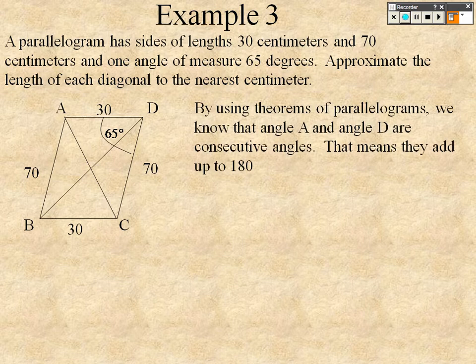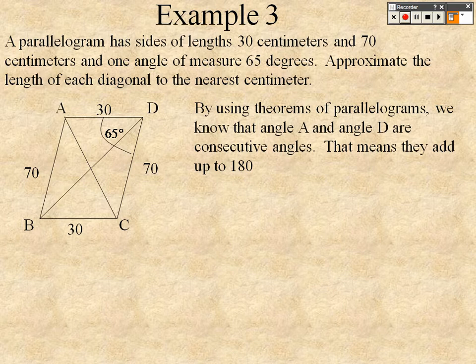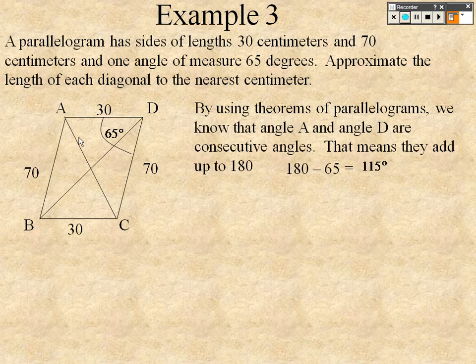By using theorems of parallelograms, we know that angle A and D are consecutive angles. If they're consecutive angles, that means they add up to 180, so if this is 65 degrees, then 180 minus 65 must tell me that that whole angle is 115 degrees.